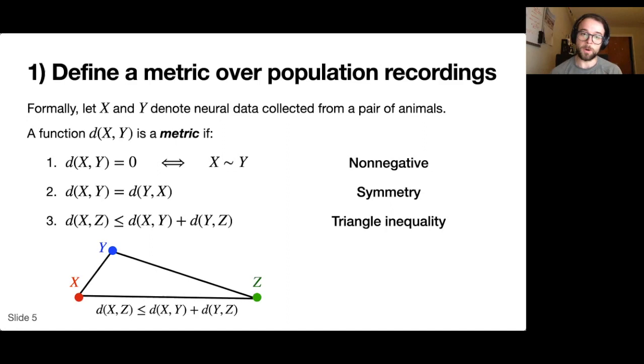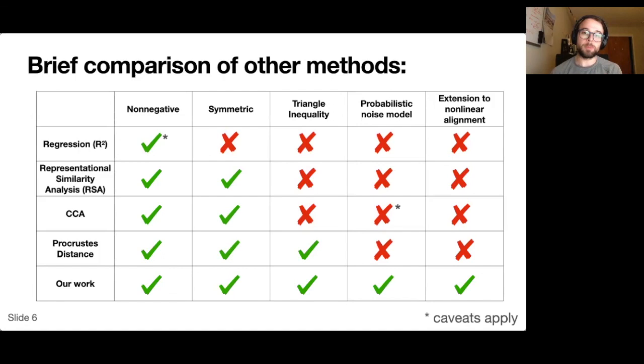I don't have time to do an in-depth comparison to other methods, but the punchline is that the triangle inequality isn't satisfied by most existing methods. We're also able to derive some interesting extensions of Procrustes alignment. We're able to model noise in a principled framework, and we're also able to allow for non-linear alignment functions and not just rotational alignments.